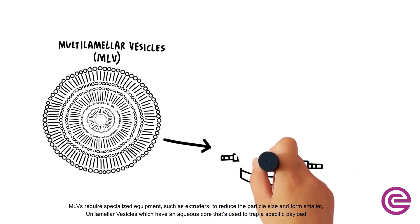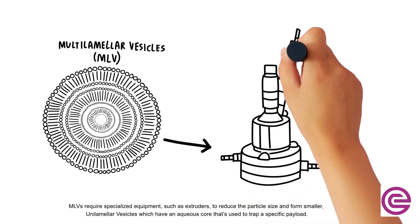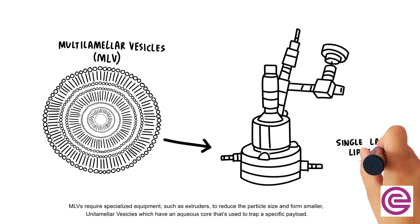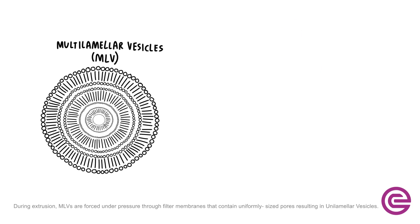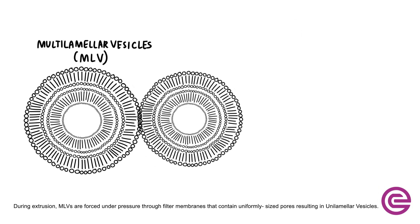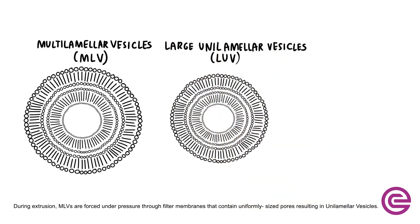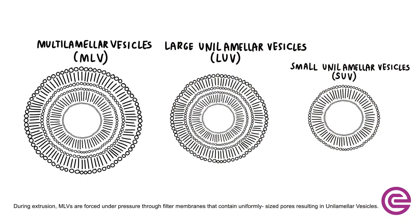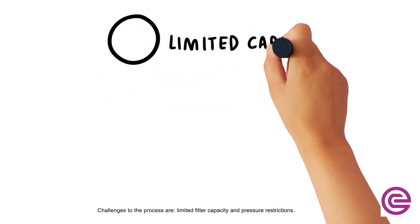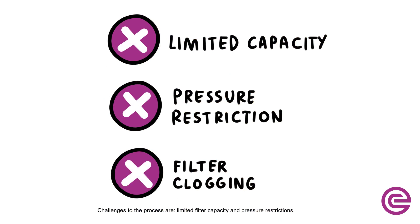MLVs require specialized equipment, such as extruders, to reduce the particle size and form smaller unilamellar vesicles, which have an aqueous core that is used to trap a specific payload. During extrusion, MLVs are forced under pressure through filter membranes that contain uniformly sized pores, resulting in unilamellar vesicles. Challenges to the process are limited filter capacity and pressure restrictions.